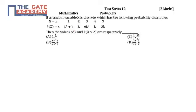Hello students, the following question is from Test Series 12, subject Mathematics, chapter Probability. The question is a 2-mark question. If a random variable X is discrete, which of the following probability distributions as shown in the table, then the value of k and probability that X is less than or equal to 2 are respectively?